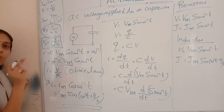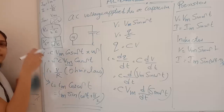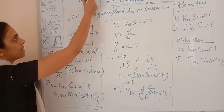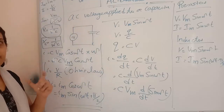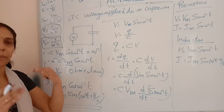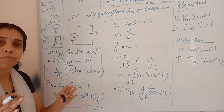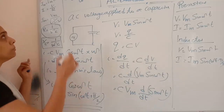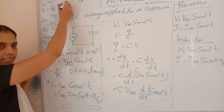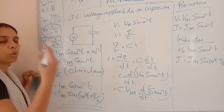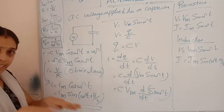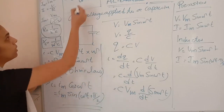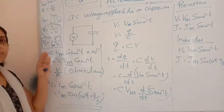As C increases, capacitive reactance decreases, meaning more current flows through the circuit. As capacitance decreases, resistance increases and less current flows. Capacitive reactance has the same unit and dimensions as resistance. Recall that for an inductor, XL equals ωL, but for a capacitor, Xc equals 1/(ωC).